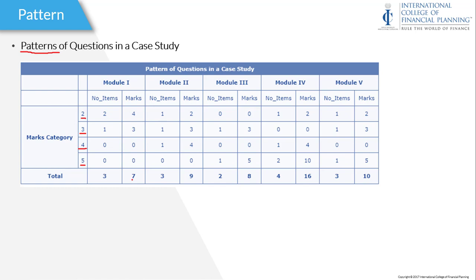Total marks from module 1 will be 7 marks. In module 2, there will be 1 two-mark question, 1 three-mark question, and 1 four-mark question, making 9 marks total from RAIP. For the final module, module 3 and module 4 are very important, because 4-mark and 5-mark questions maximum will come from the third and fourth modules. The weightage of the fourth module is 16 marks, the third module is 8 marks, and tax liability related questions from module 5 are worth 10 marks.